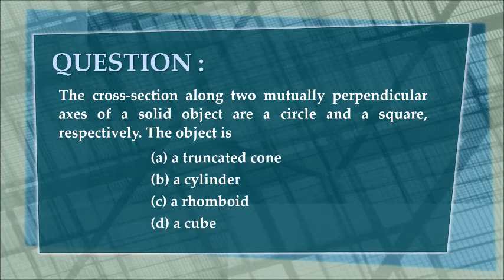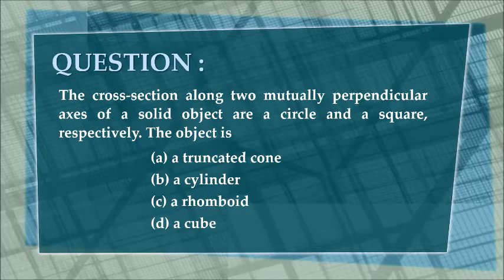The object is either A, a truncated cone, B, a cylinder, C, a rhomboid, or D, a cube.